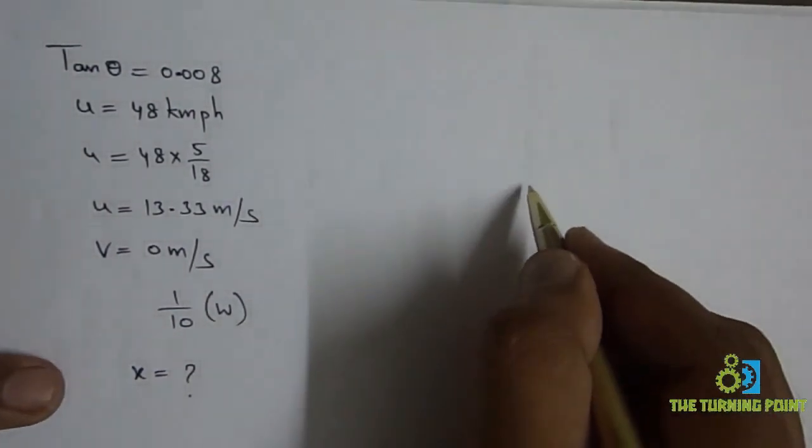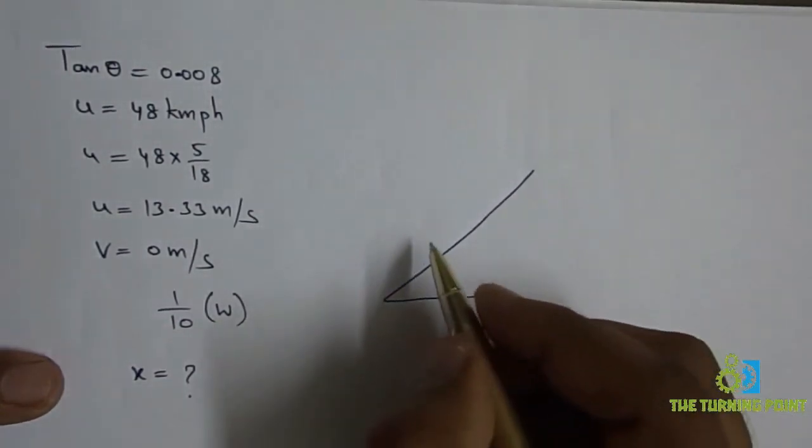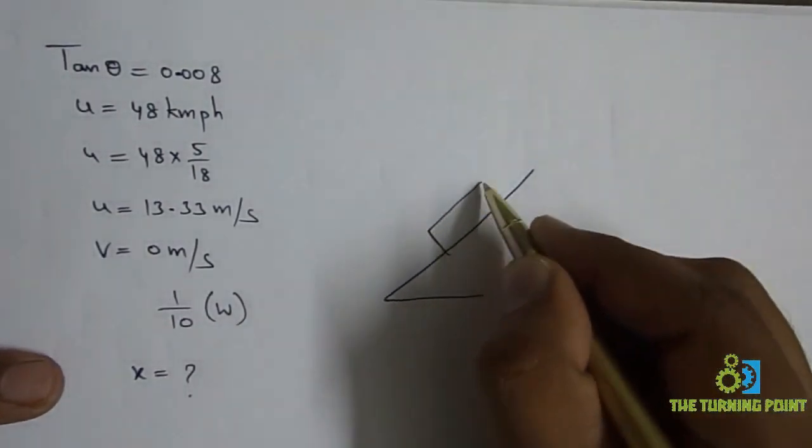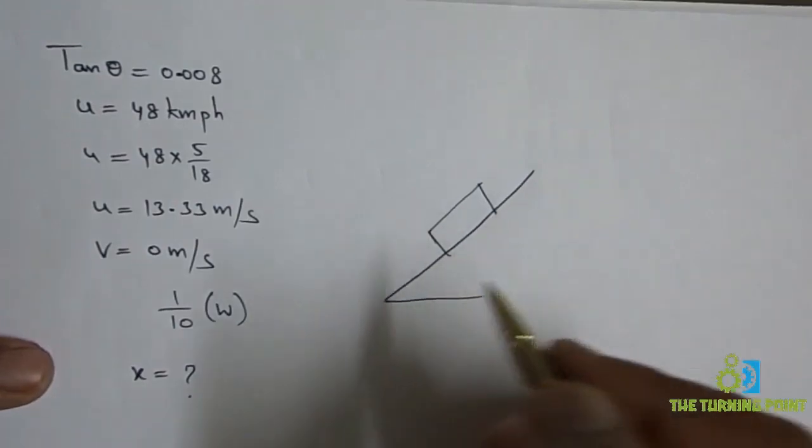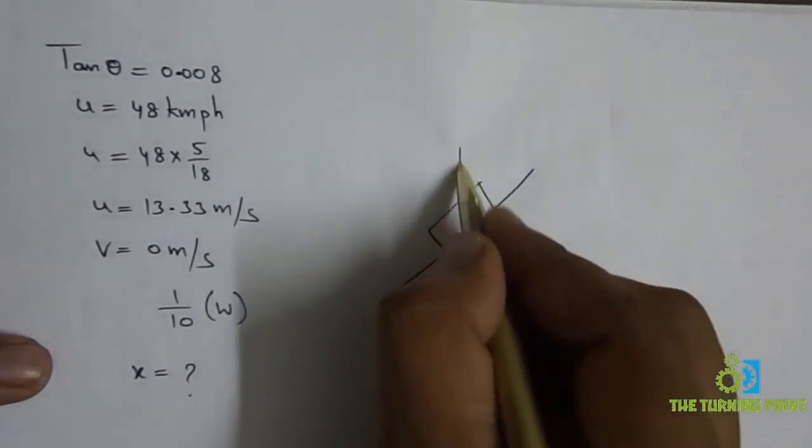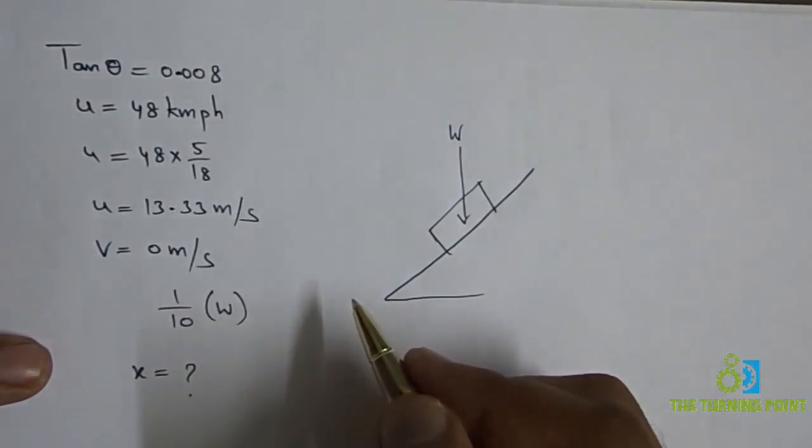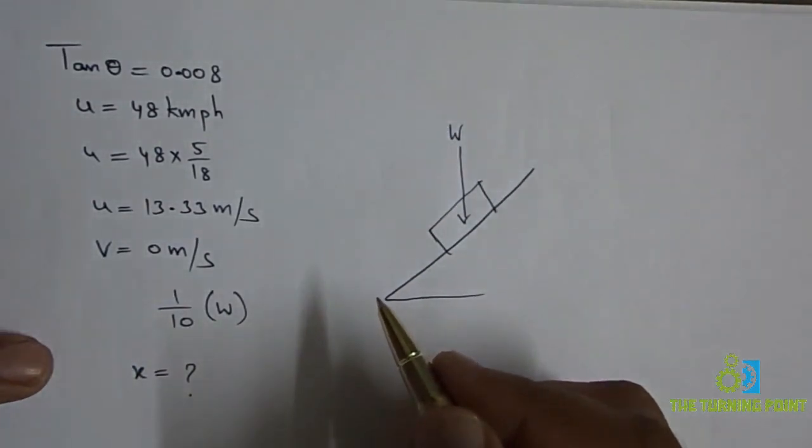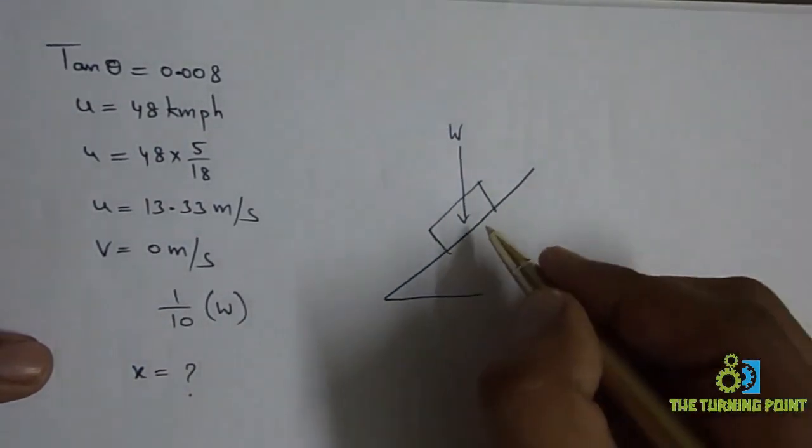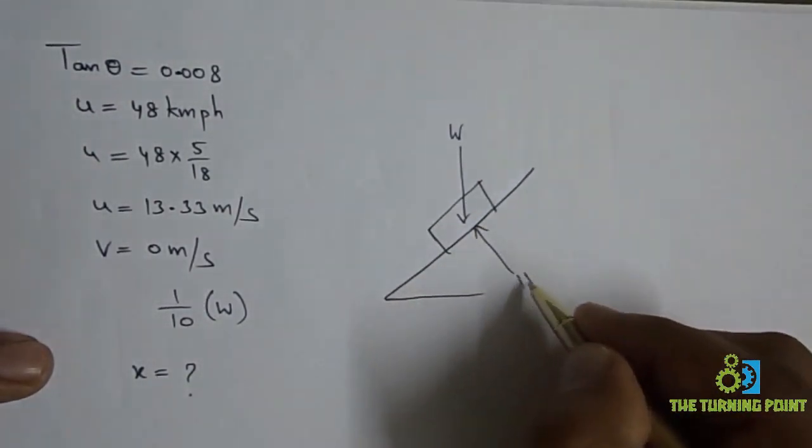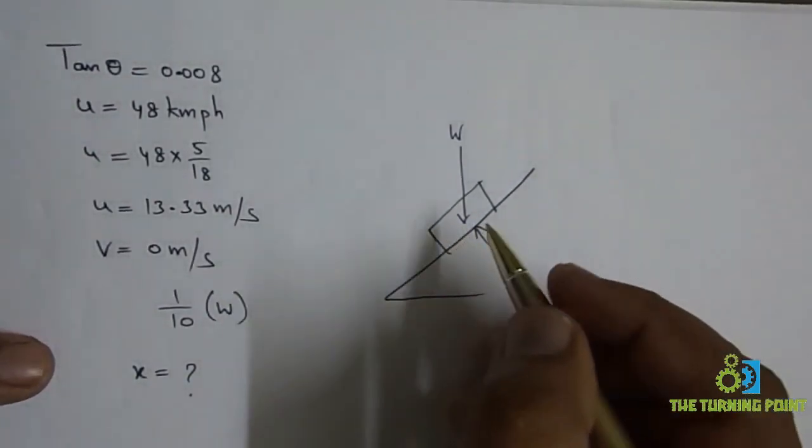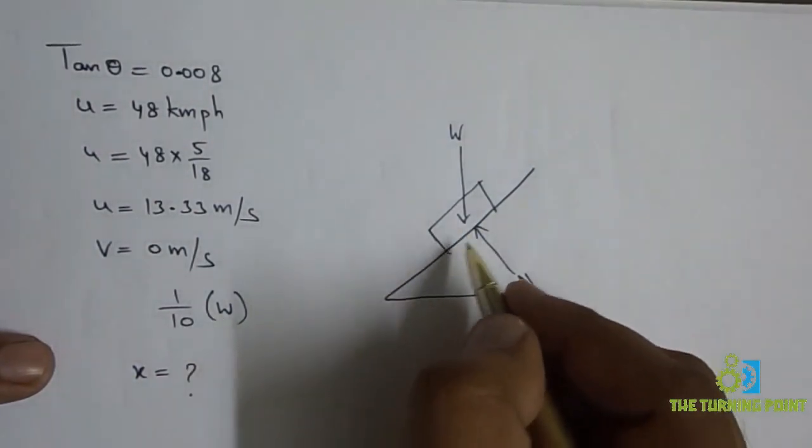Let us consider this is the inclined plane. On it, there is a train like this. Weight of the train acts vertically downwards. Normal reaction perpendicular to surface. It is moving downwards.